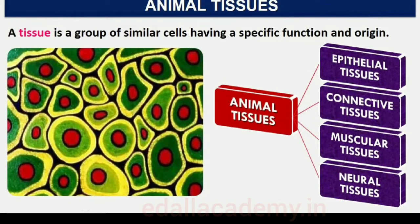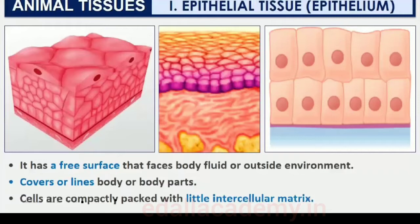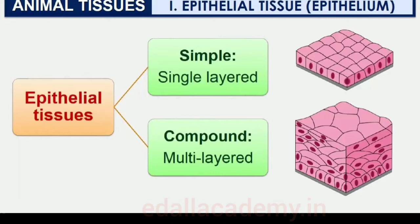7.1.1 Epithelial Tissue. We commonly refer to an epithelial tissue as epithelium, plural: epithelia. This tissue has a free surface which faces either a body fluid or the outside environment, and thus provides a covering or a lining for some part of the body. The cells are compactly packed with little intercellular matrix.